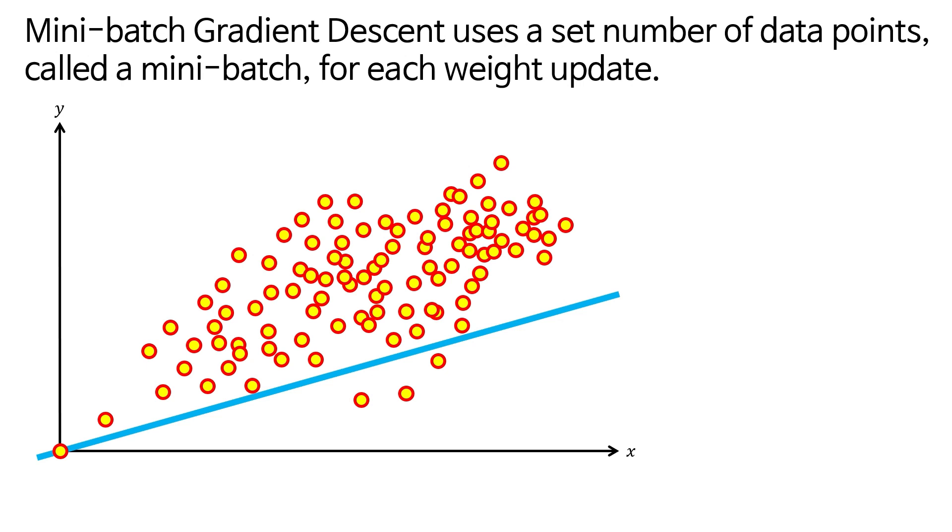Mini-batch gradient descent uses a set number of data points, called a mini-batch, for each weight update.